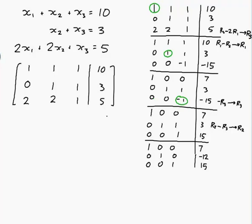So my solutions are... I'm just going to put that over here on the left-hand side. In fact, there's only one solution, isn't there? The solution is that x1, x2, x3 equals 7, minus 12, 15.